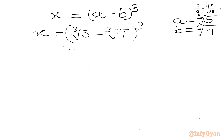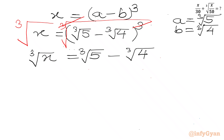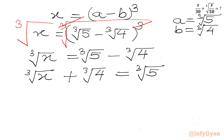Now we will take cube root of both sides. The cube root and cube cancel on the right-hand side, giving cube root of x on the left equals cube root 5 minus cube root 4. Adding cube root 4 to both sides gives cube root x plus cube root 4 equals cube root 5. Now we will cube both sides, raising each side to the power 3.